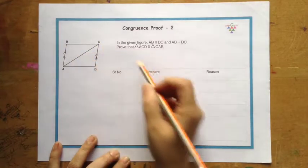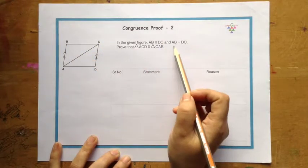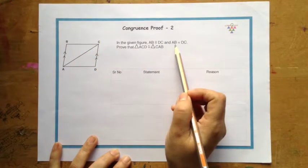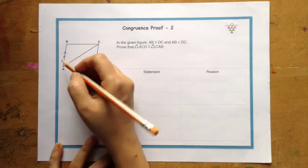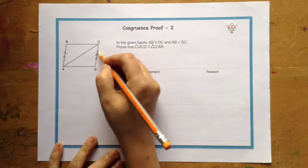AB is parallel to DC and AB is equal to DC also, so this is equal to this.